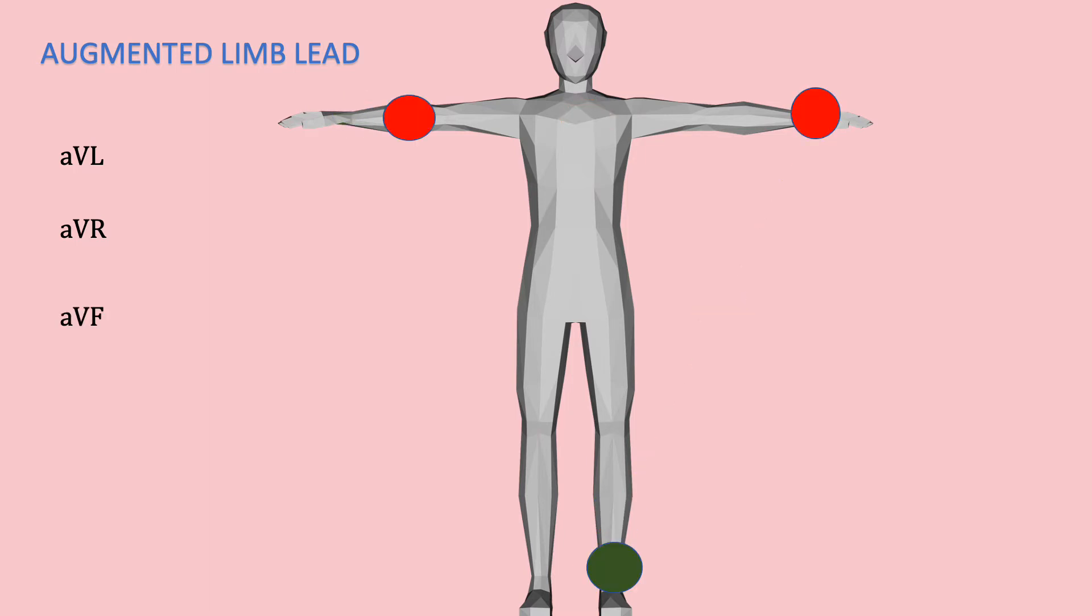So now we move on to AVF. For AVF, you have positive electrodes on the left ankle and two negative electrodes on the left and right arm. So to remember this augmented limit sequence, just remember this mnemonic: Let's rock future!